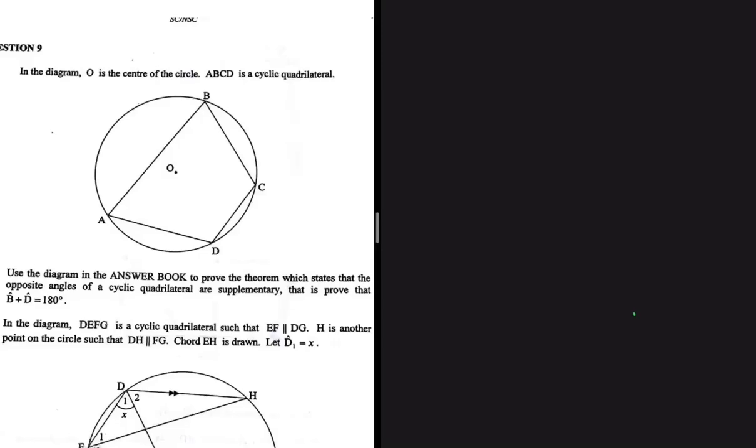Let's prove why opposite angles of a cyclic quadrilateral are supplementary. To be specific in this situation, why angle B plus angle D will equal 180 degrees. We're going to do this using only two steps.